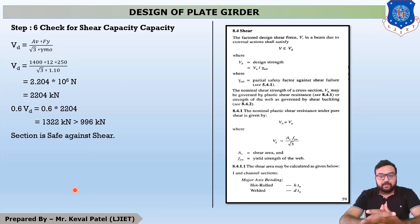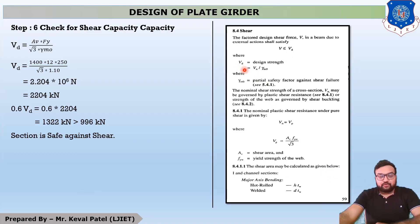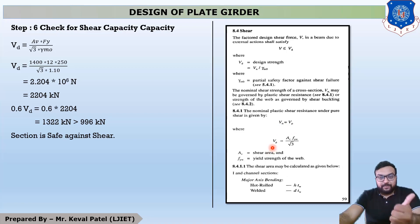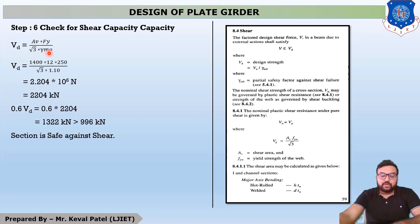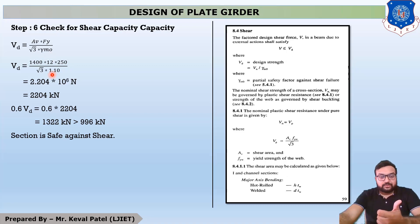Now moving to step number 6, check for shear capacity. Move to page number 59, where the equation is VD = VN / γM0 and VN = VP = Av × Fy / √3. Putting this together: VD = Av × Fy / (√3 × γM0). Fy = 250, √3 is constant, γM0 is the partial safety factor. The only unknown remaining is Av, the shear area.